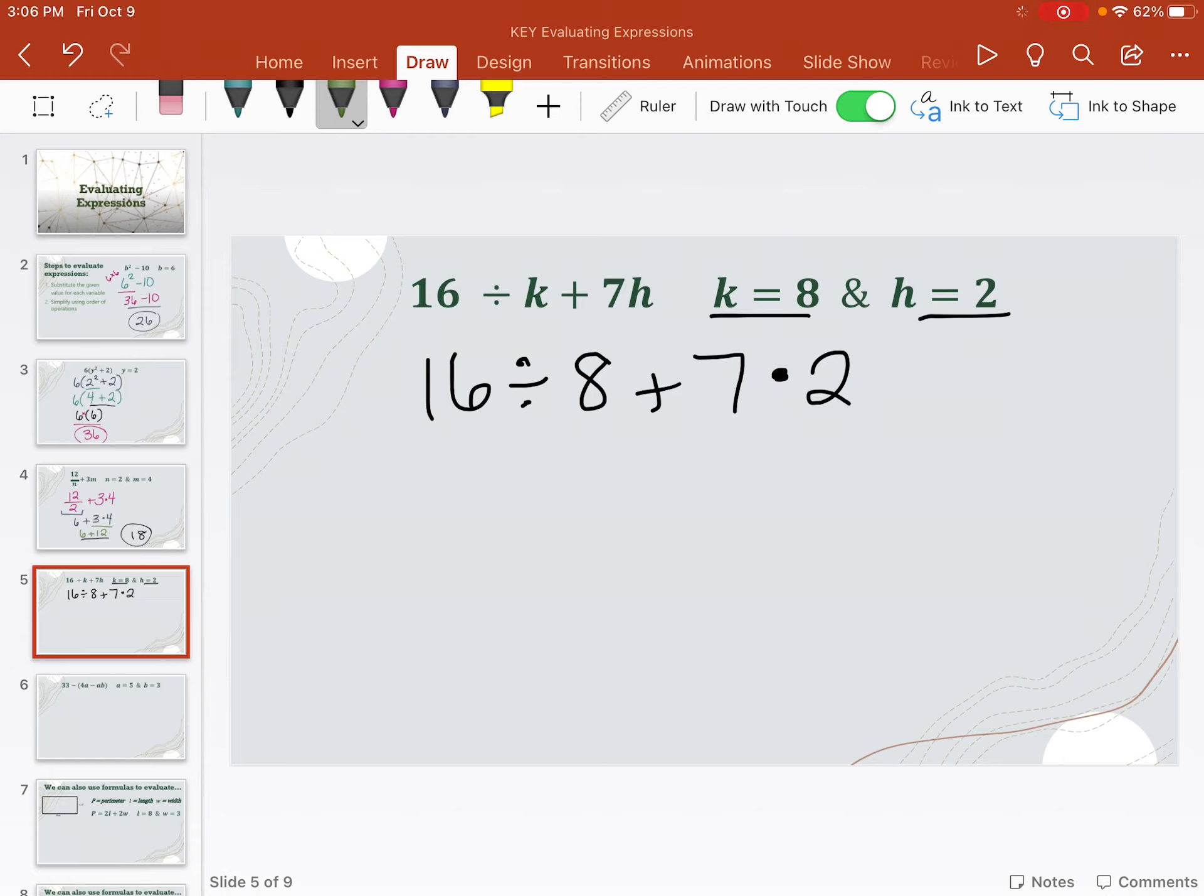Okay, so to solve this problem, I'm going to multiply, divide, left to right. So I'm going to do this division first. 16 divided by 8 is 2. Bring everything else down. Then multiplication. So 7 times 2 is 14. And then finally, my addition, 14 plus 2 is 16.